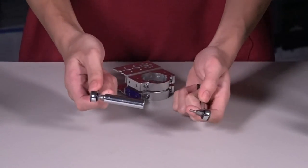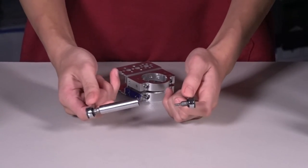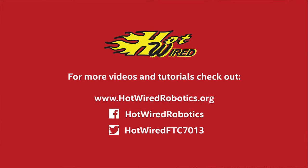And then this is the same thing. It's just a ratchet with a socket attachment to get reach for nuts. Thanks for watching and make sure to visit our website hotwirerobotics.org for more tips and tricks.